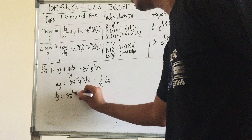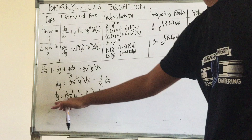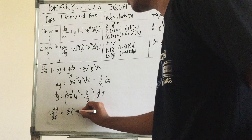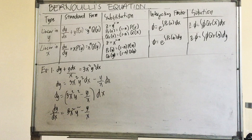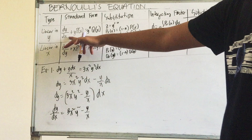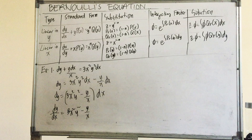So dy equals 3x squared y squared minus y over x dx. Dividing both sides by dx, we get dy over dx equals 3x squared y squared minus y over x. From here we know this is linear in y, so we need to make this a standard form. The standard form for linear in y is dy over dx plus y p(x) equals y raised to n times q(x). We need to transpose the y p(x) term to the other side.